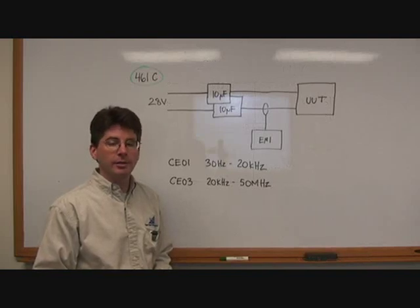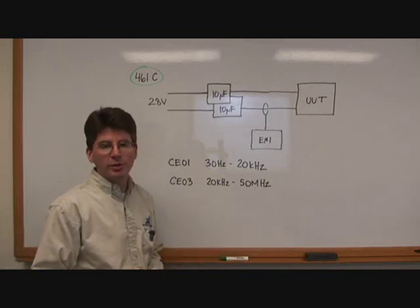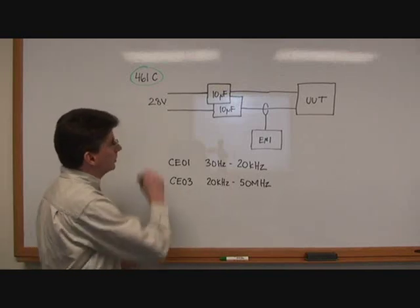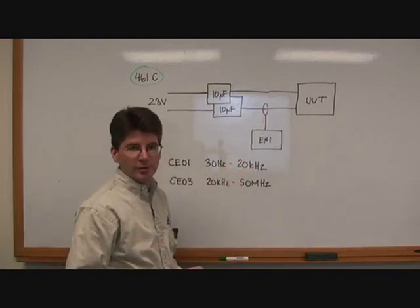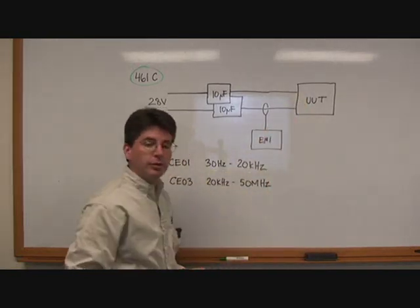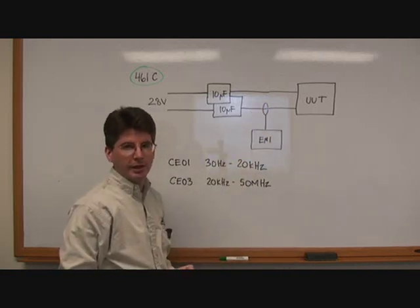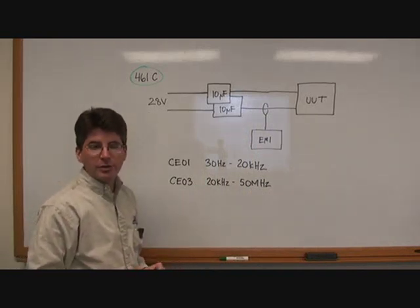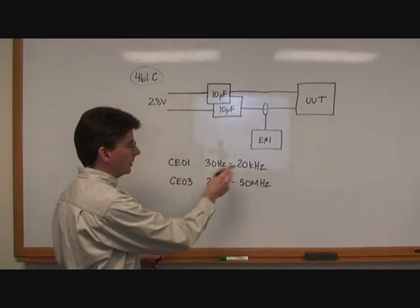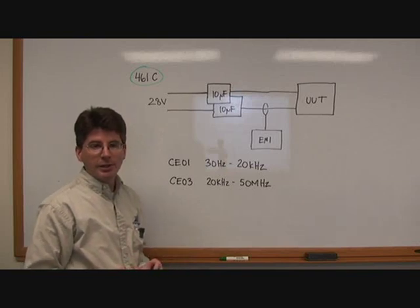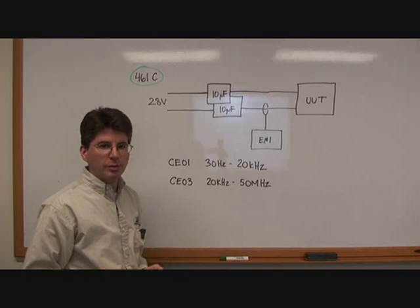This is the setup for measuring Conducted Emissions according to MIL-Standard 461, Revision C. This is an older method and it's similar to what is used for DL160. In revision C, we use a 10 microfarad feed-through capacitor and a clamp-on current probe to measure the Conducted Emissions on the input line to the unit under test, which is the DC-DC converter and associated EMI filter. There are two Conducted Emissions requirements in 461C. The first is CE01, which is in the frequency band 30 Hz to 20 kHz. VPT's DC-DC converters do not emit any noise in this range. The second is CE03, which is in the range of 20 kHz to 50 MHz. This is where we will primarily be concerned.